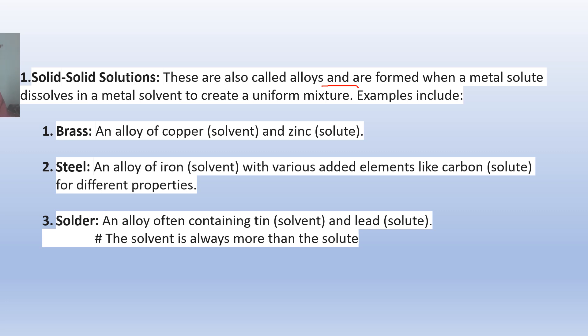These are formed when a metal solute dissolves in a metal solvent to create a uniform mixture. The examples are many: brass is one common example, an alloy of copper which is solvent present in more amount and zinc which is solute which is dissolved in copper. Steel - an alloy of iron solvent with various added elements like carbon. Solute may have phosphorus, may have manganese. Solder - an alloy often containing tin which is solvent and lead which is solute. The solvent is always more than the solute. This point must be noted and carefully used in the later videos as they come up.